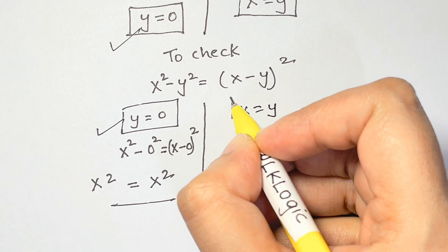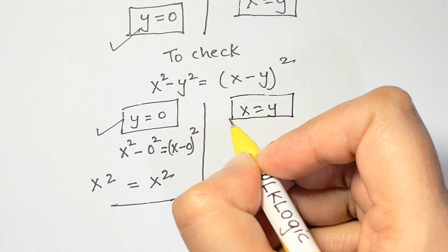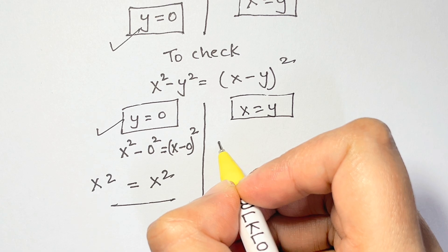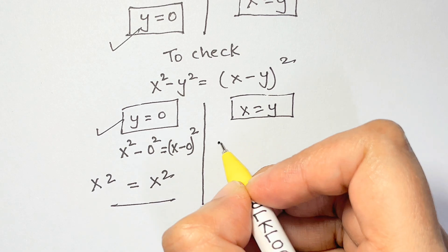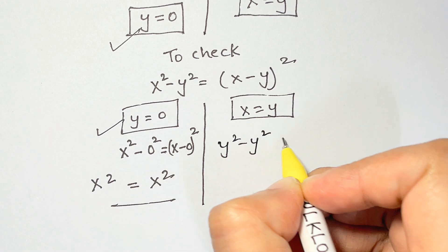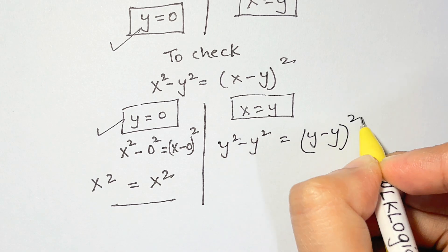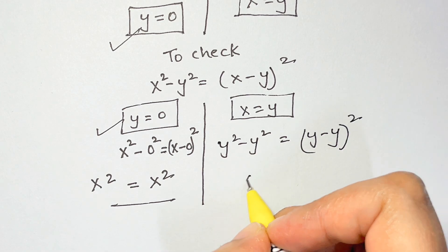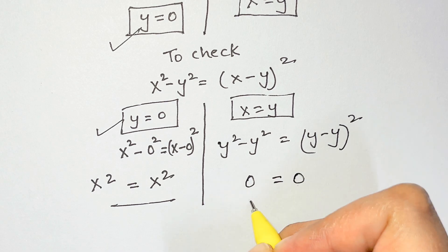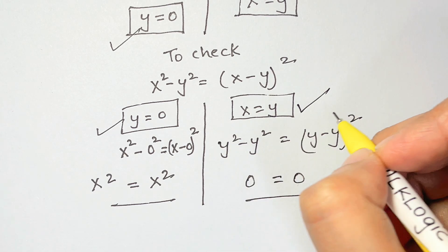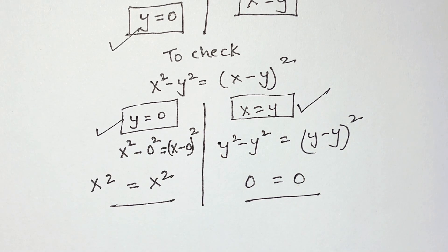Now let's check x = y. Substituting x as y: y² minus y² equals (y minus y)², which gives 0 equals 0. That's true! So these are the two solutions. Thank you so much for watching, bye bye, take care.